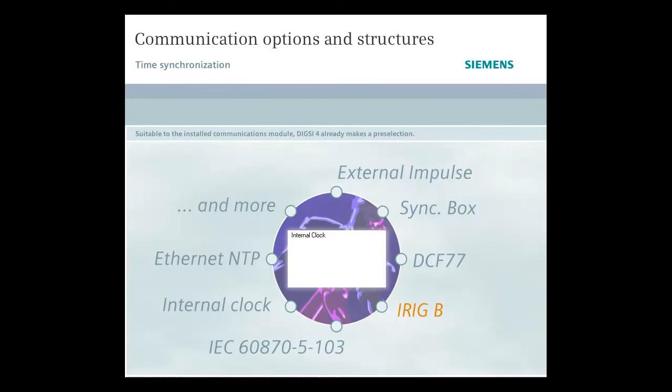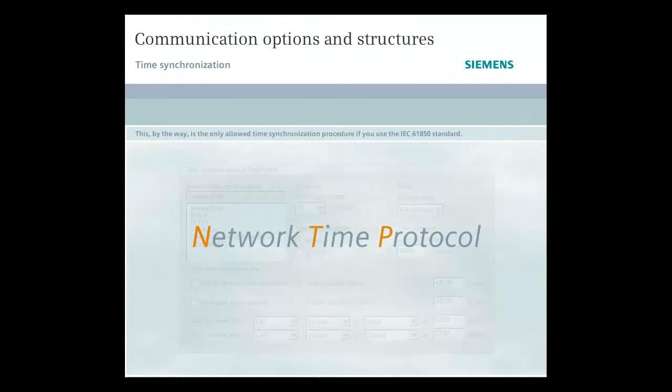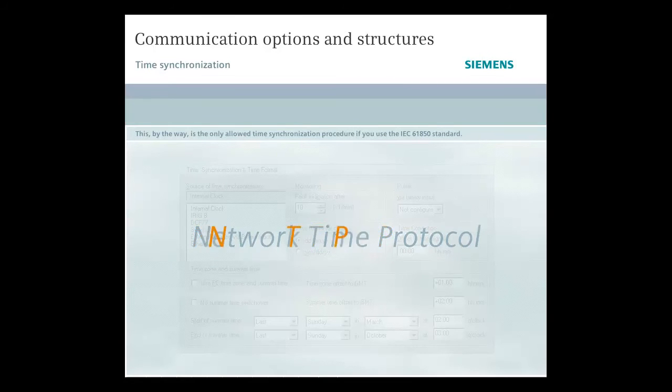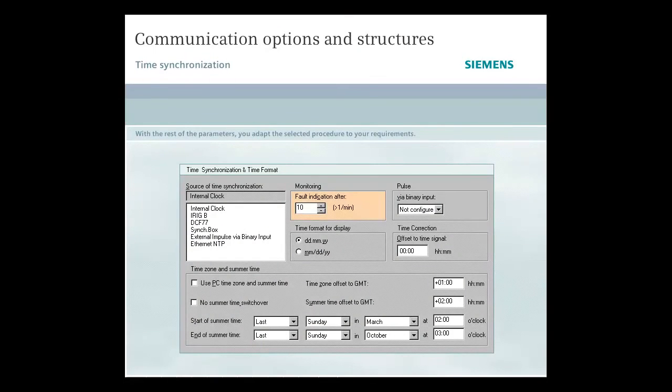Suitable to the installed communications module, DIGSI 4 already makes a pre-selection. For an Ethernet module, for example, you will also find the Network Time Protocol, short NTP, in the selection list. This, by the way, is the only allowed time synchronization procedure if you use the IEC-61850 standard. With the rest of the parameters, you adapt the selected procedure to your requirements. The DIGSI help gives you more information on time synchronization.